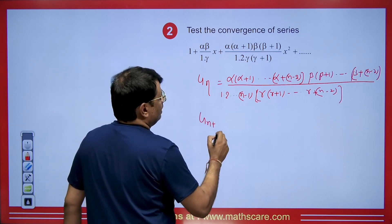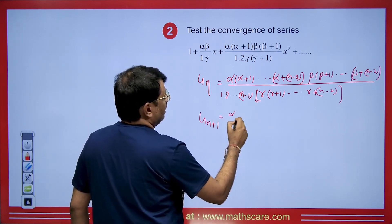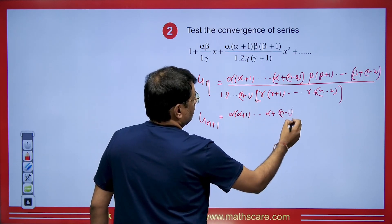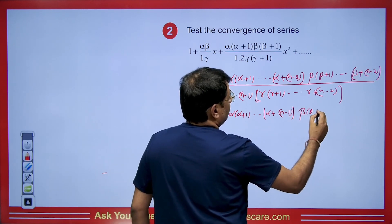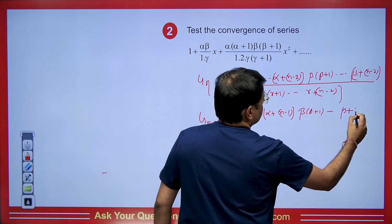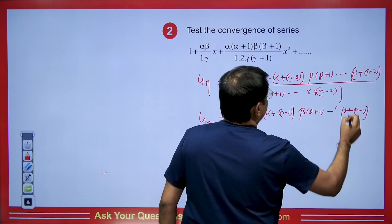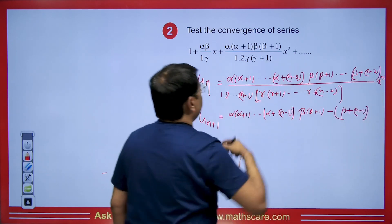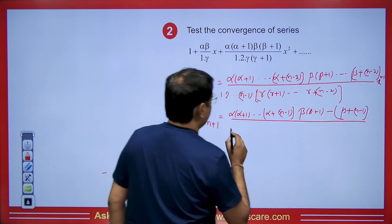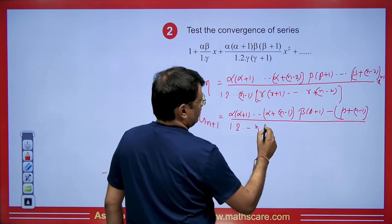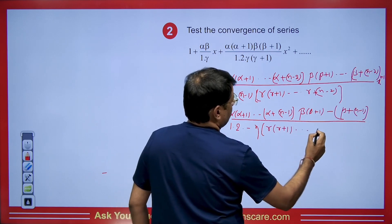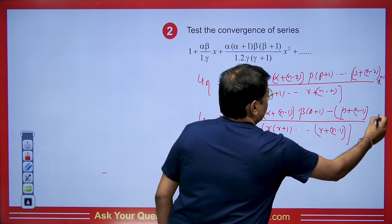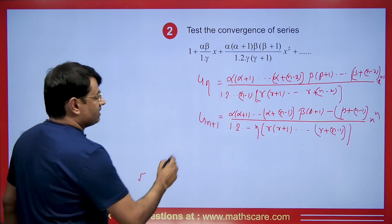Now for u_{n+1}: the numerator extends to α(α+1)···(α+n−1) times β(β+1)···(β+n−1) times x^n, and the denominator becomes γ(γ+1)···(γ+n−1) times 1·2···n. Note there is an extra factor of x, so x appears as x^(n−1) in u_n and x^n in u_{n+1}.